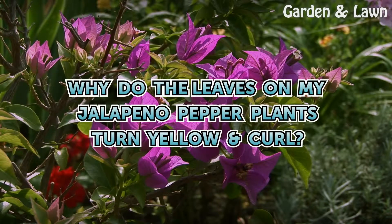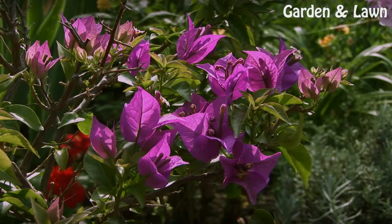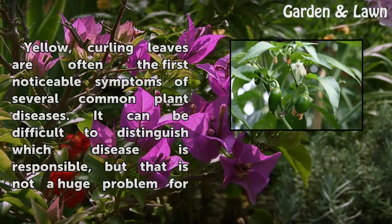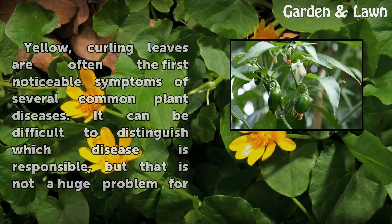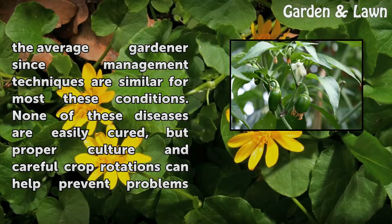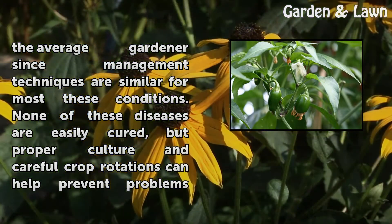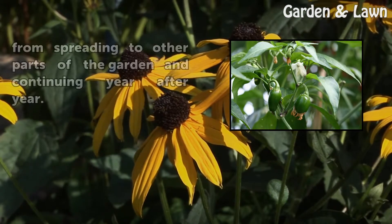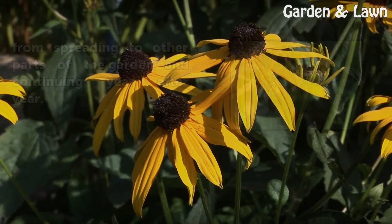Why do the leaves on my jalapeño pepper plants turn yellow and curl? Yellow, curling leaves are often the first noticeable symptoms of several common plant diseases. It can be difficult to distinguish which disease is responsible, but that is not a huge problem for the average gardener since management techniques are similar for most of these conditions. None of these diseases are easily cured, but proper culture and careful crop rotations can help prevent problems from spreading and continuing year after year.